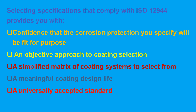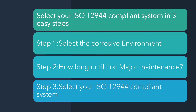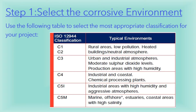Here we are going to select your ISO 12944 compliant system in three easy steps. Step 1: select the corrosive environment. In the table you can see ISO 12944 corrosivity classifications from C1 to C5M. C1 is very low — very little or no pollution — typical of heated buildings such as offices, shops, schools, and hotels. C2 is low level of pollution; externally, C2 environments are typically rural areas with atmospheres with a low level of pollution; internally, C2 environments are unheated buildings where condensation may occur.